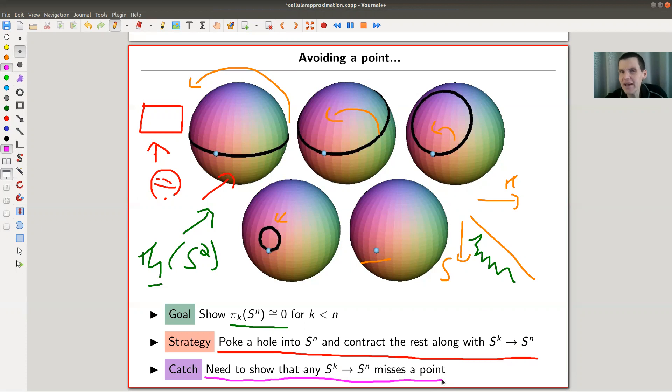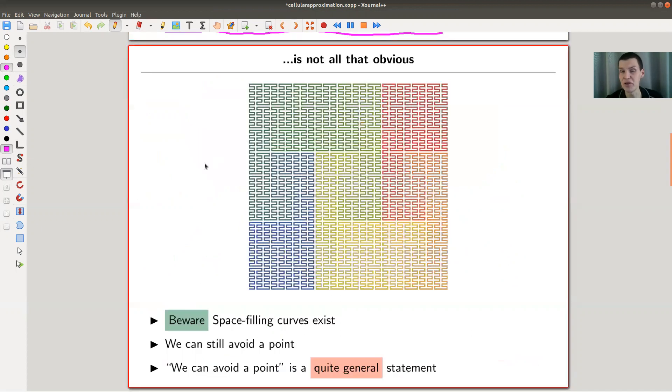Sounds like a really good strategy, and actually this is how you would do it. It's just a slight catch that you need to make sure that everything kind of misses at least one point. And that's not so obvious. So let me show you in a second the mathematical demonstration of the space-filling curve.